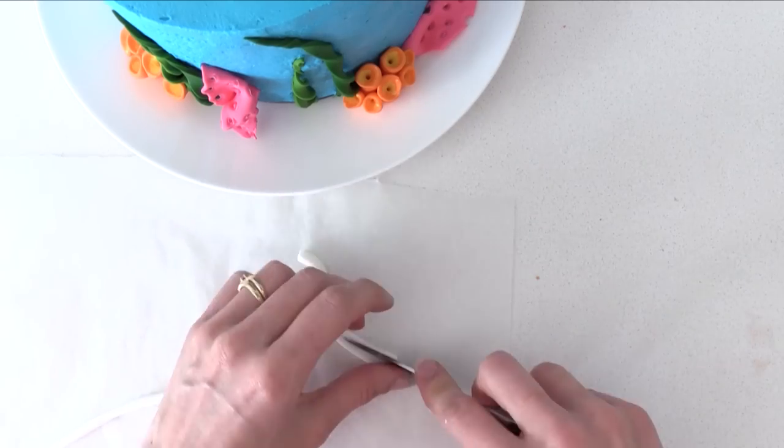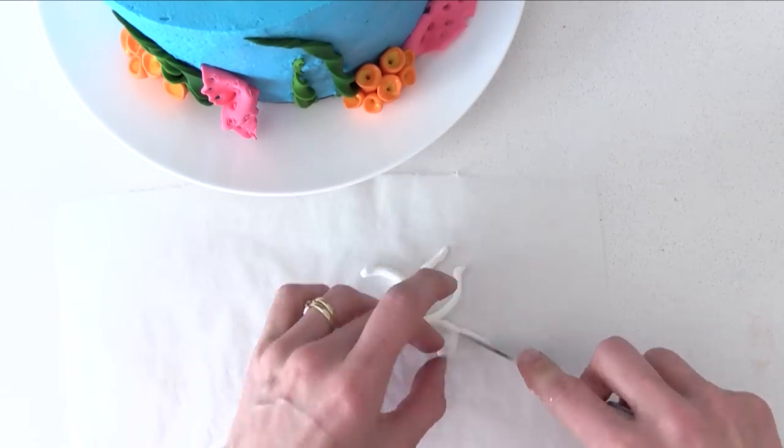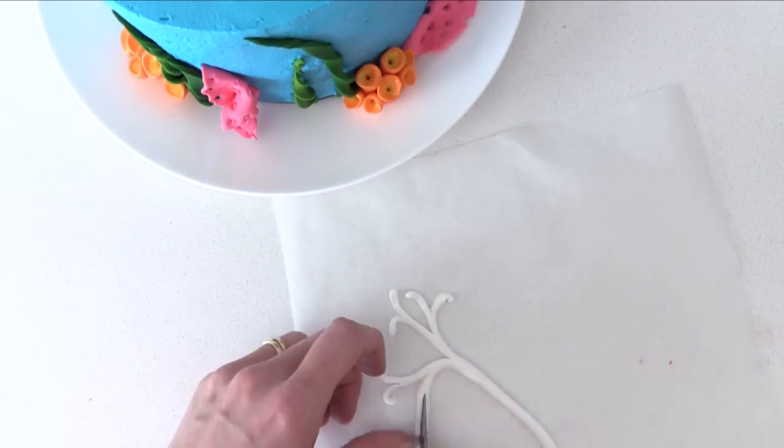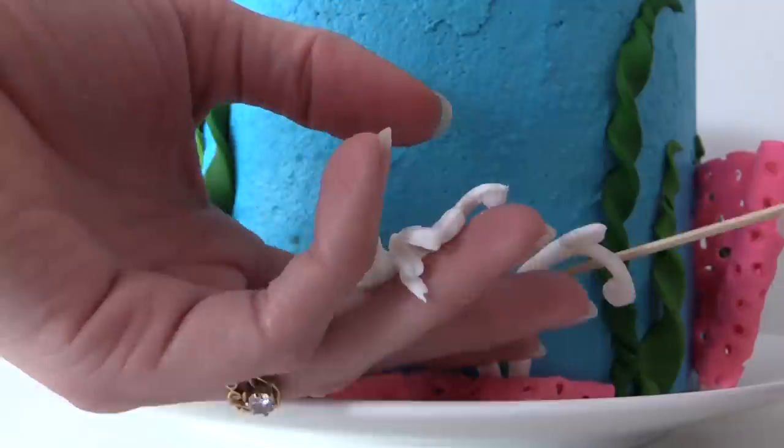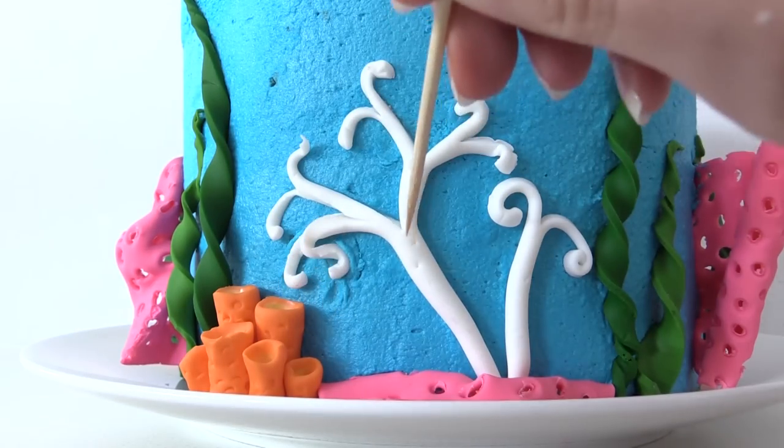Roll a snake of white and split the top in two, then split that branch in two and split each of those again. Roll the ends down a little. Dampen it with water and add it to the side of your cake, then poke it with a skewer to roughen it up.